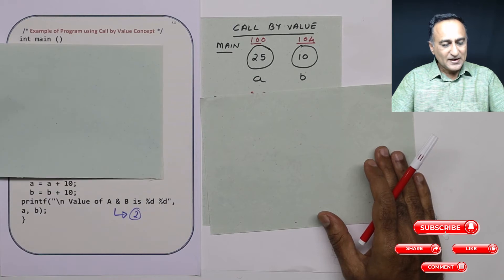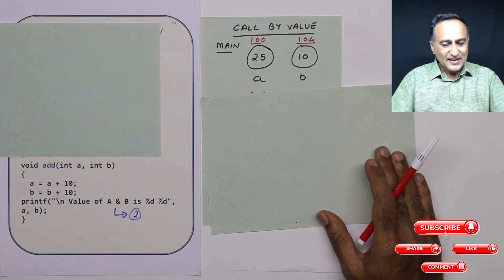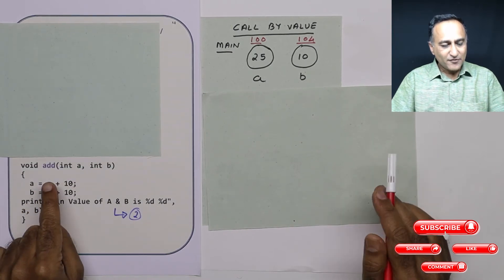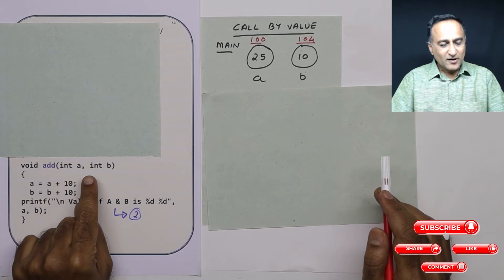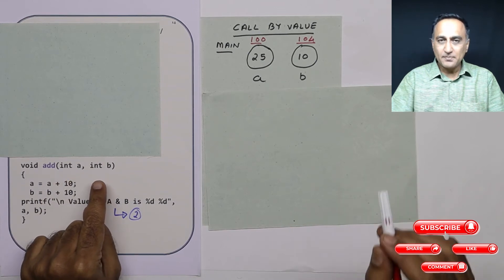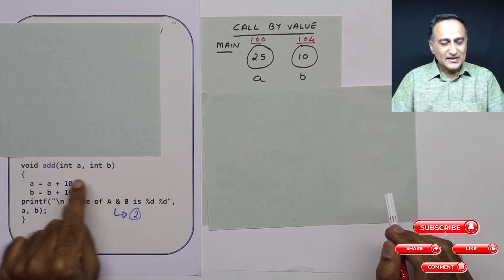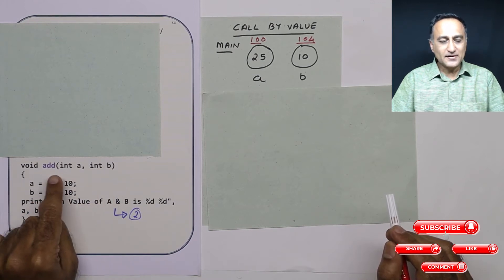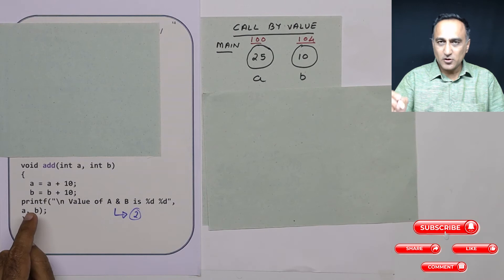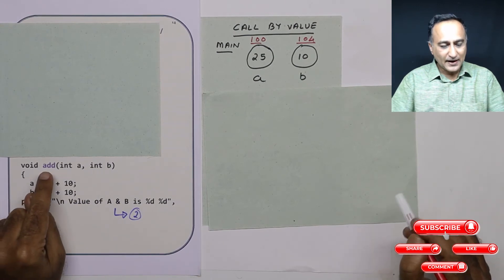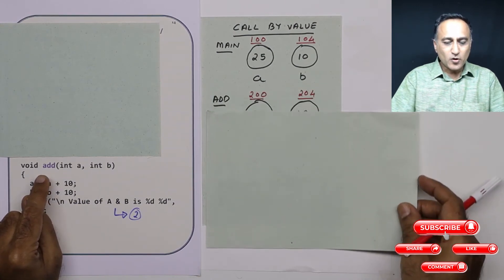In add, I have declared int a, int b. Let me tell you one thing: this a and b is local to add. The a and b in main is not the same as a and b in add. To just give you conceptual clarity.